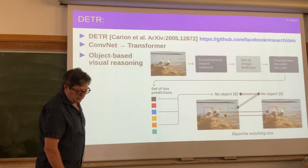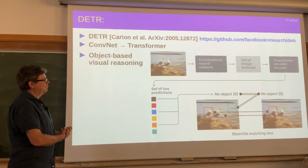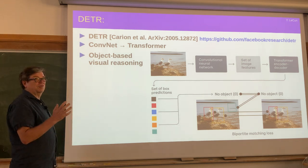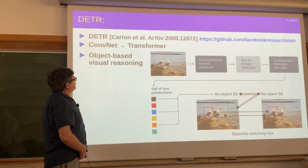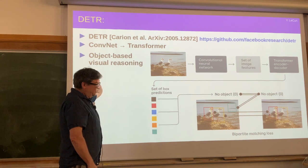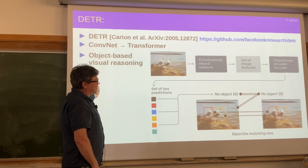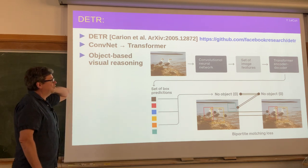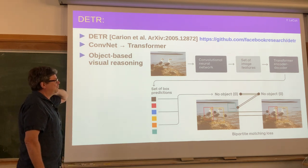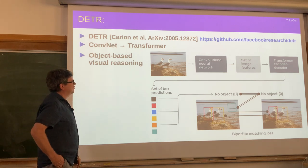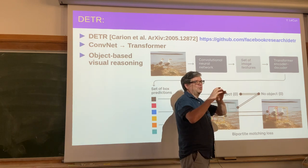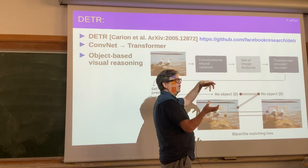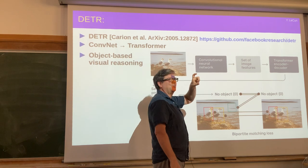Here is a more recent example: a very cool vision system architecture for object detection called DETR, proposed by Carion et al. Nicolas Carion was a resident PhD student at FAIR in Paris, now a postdoc at NYU. In this architecture, you take an image, run it through a convolutional net to get dense image features — a 3D array where for each location you have a vector describing what's there — and then you feed those feature vectors as tokens to a transformer architecture.